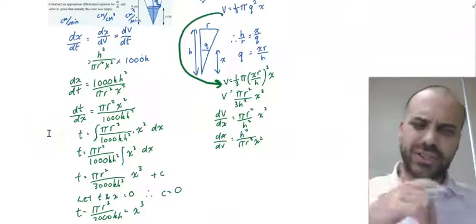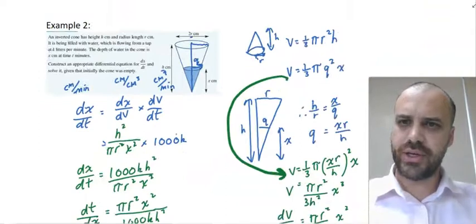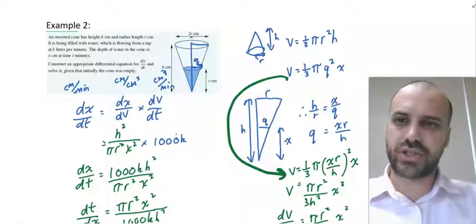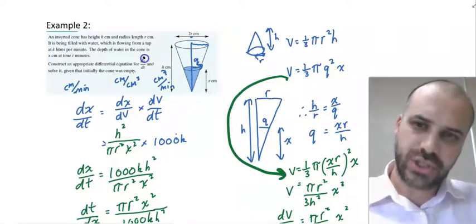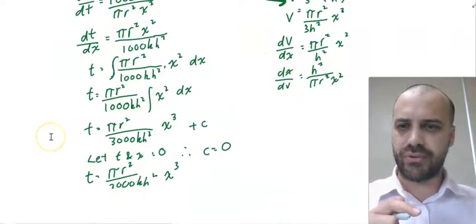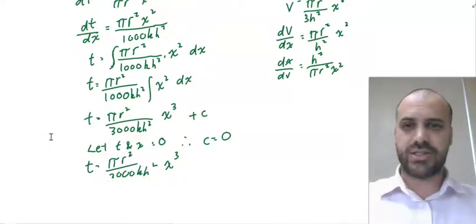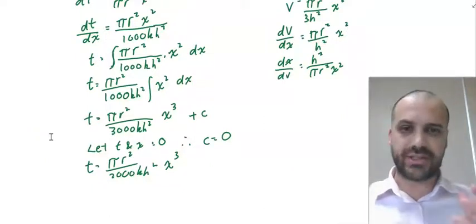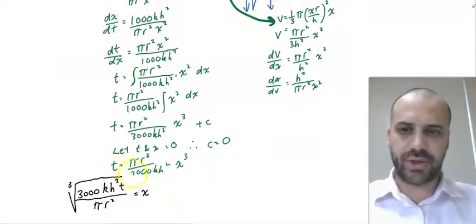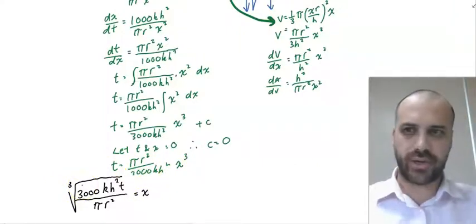Now I said it's my final solution, but it's not really my final solution. Because if we dive into our question, we've constructed an appropriate differential equation dx/dt and solve it. When you solve a differential equation, you're solving it for the x bit, not the t bit. And so when we've written it as t equals this, we now need to rearrange it to make x the subject. That's the solution of a differential equation. And so my final solution is a rearrangement of this line here. x equals the cube root of 3000kh²t/πr².